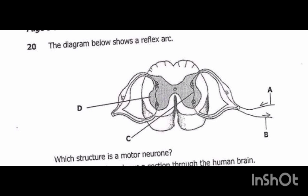Which part of the reflex arc is a motor neuron? We have parts A, B, C, and D. A is the sensory neuron, B is the motor neuron, C is the relay neuron, and D is the gray matter. Which structure is a motor neuron? The answer is B.